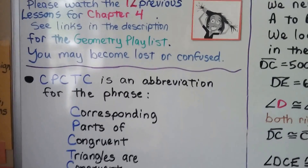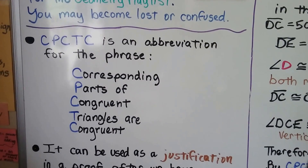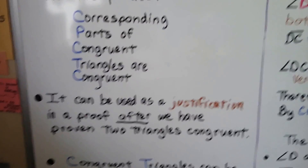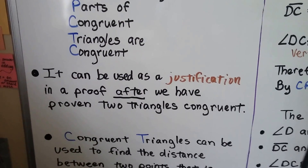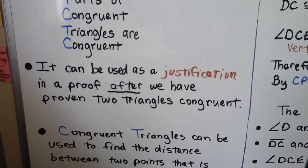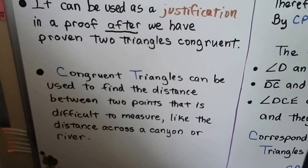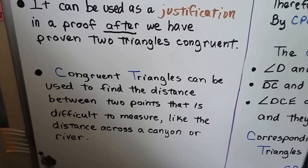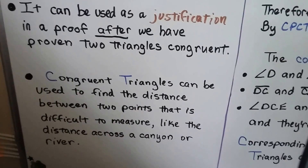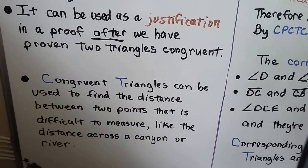CPCTC is an abbreviation for the phrase 'corresponding parts of congruent triangles are congruent.' It can be used as a justification — a reason — in a proof after we have proven two triangles congruent. Congruent triangles can be used to find the distance between two points that is difficult to measure, like the distance across a canyon, a river, or a lake.